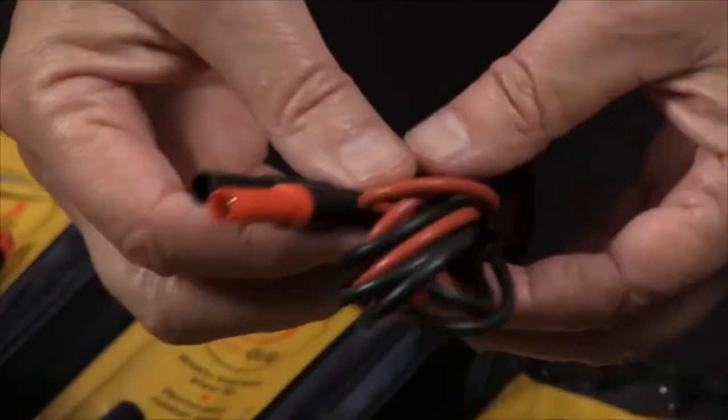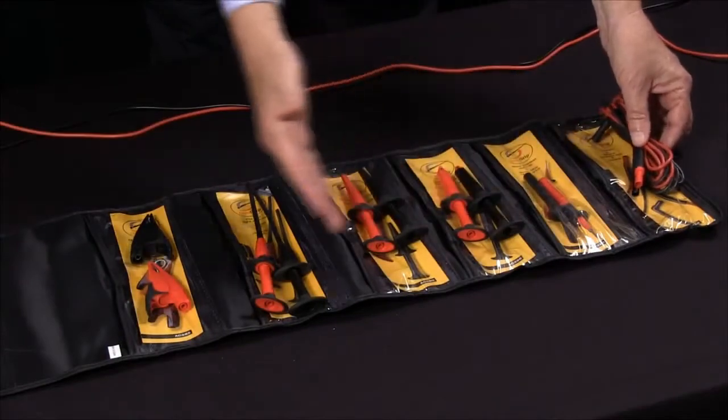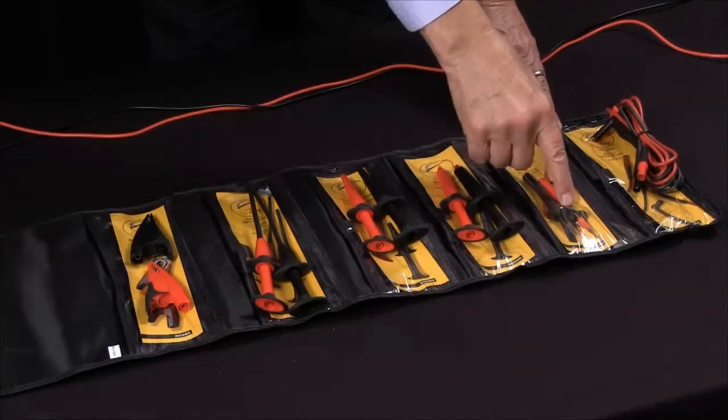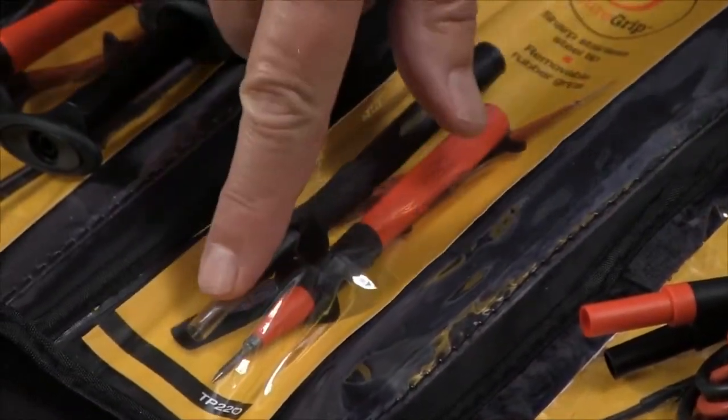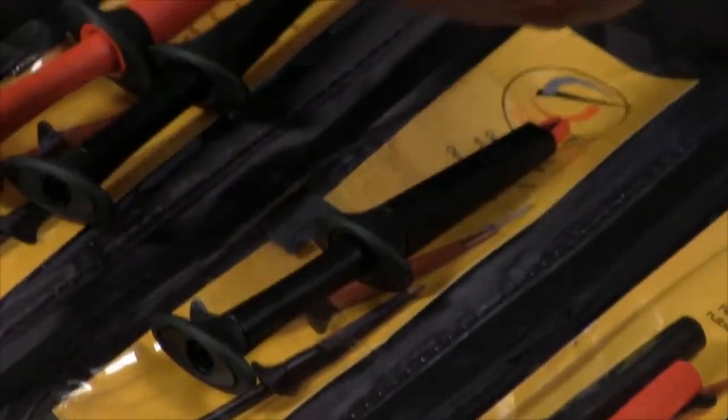This particular set is a modular set with banana plugs on both ends so you can adapt them to different kinds of accessories. We've got the traditional TP test probes with sharp points and large alligator clips.